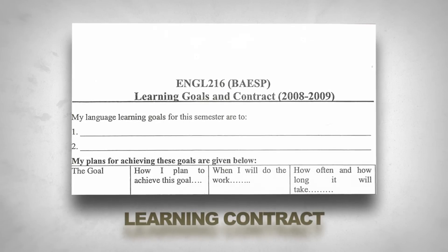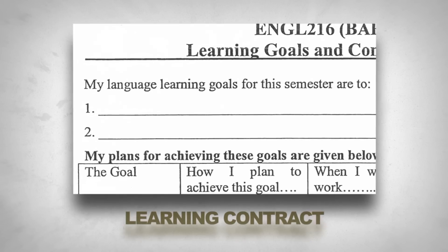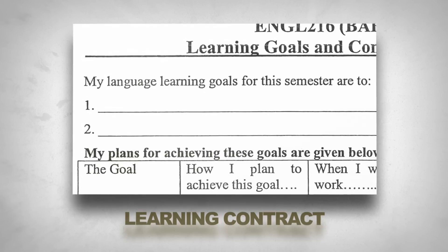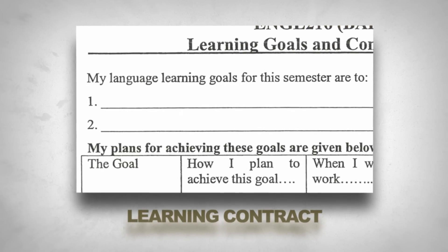Students have to be in charge of what to learn and how to learn. A learning contract effectively shifts the responsibility of planning to the students. As you can see from the learning contract, students have to first write down two general learning objectives — about speaking or writing — and then in the table, they have to give very specific information about the objectives and what they plan to do.